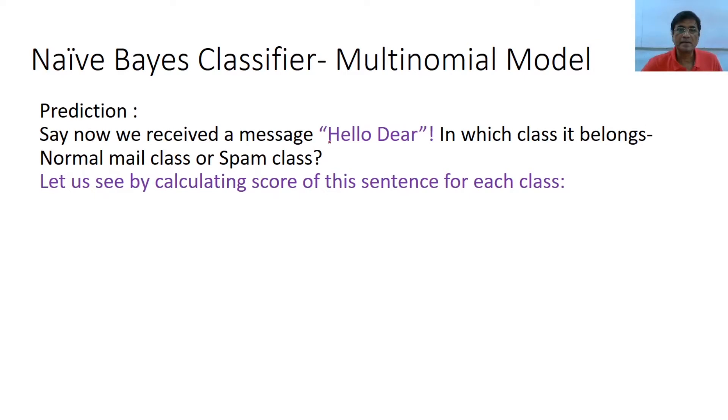Say I received a message "Hello Dear!" So my task is based on my model, in which class it belongs - normal mail class or spam class? So that means, let us again try to, what we have now we will need to calculate now that this is normal class x_j, j equals to 1, 2, only 2 words I have received, hello dear.